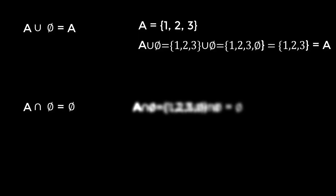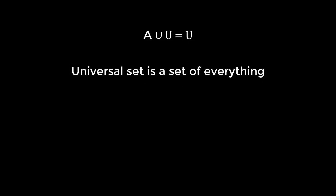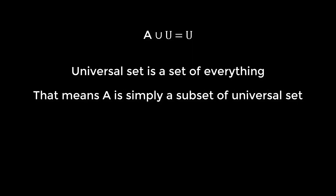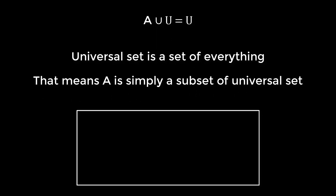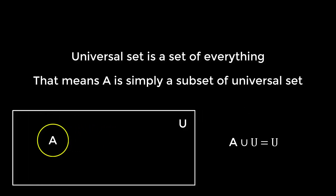The next property says A union universal set is the universal set. This is obvious because the universal set is a set of everything, which means A is simply a subset of the universal set. In a Venn diagram, if this is U, then this is A. That is why taking A union universal set gives us the universal set.